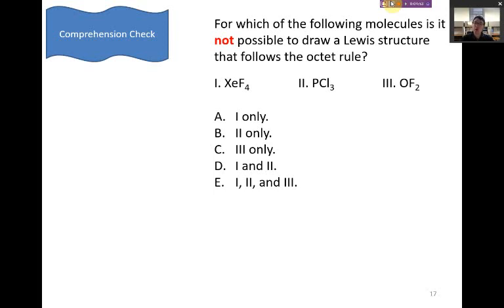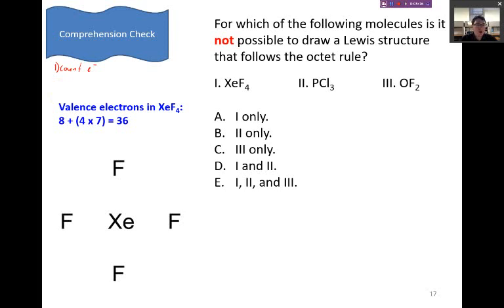Welcome back. So we want to know for which element is it impossible to draw it following the octet rule? Remember, the steps for drawing our Lewis structures. We need first to count the electrons. Xenon tetrafluoride has 36 total electrons. The next step is to draw the central atom, and the central atom will be the least electronegative element. And we connect those atoms with single bonds.